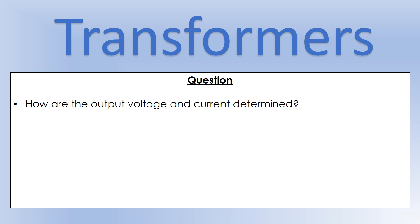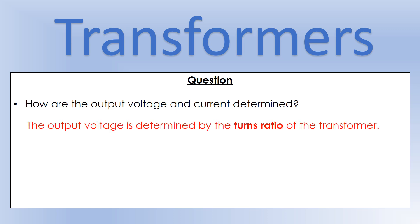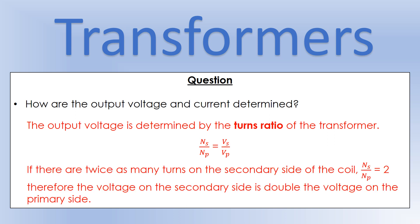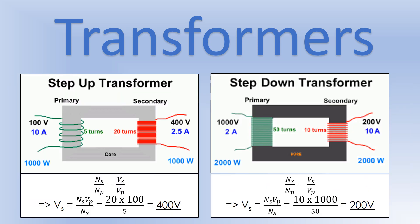To get actual voltage values, we use the turns ratio of a transformer. The turns ratio is the number of turns on the secondary side (Ns) divided by the number on the primary side (Np), and the voltage follows exactly the same ratio: Ns/Np = Vs/Vp. So if the turns ratio is 4 — four times as many turns on the secondary — the voltage is stepped up by a factor of four to 400V. For a step-down transformer with a turns ratio of 0.2, the voltage is multiplied by 0.2 to give 200V.